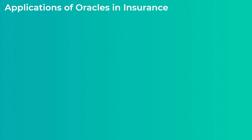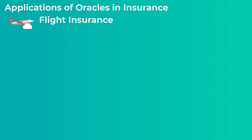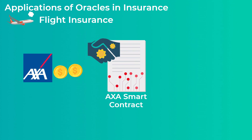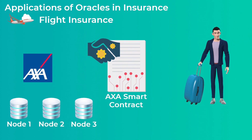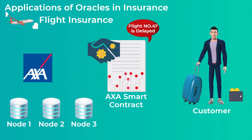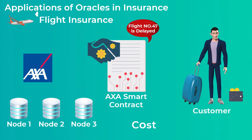Flight insurance is an area where oracles are currently being used by big insurance companies like AXA. The insurance company locks a large amount of money in a smart contract. This smart contract gets flight delay data from oracle nodes, and when a customer's flight is delayed, it automatically sends them their insurance money — removing the need to contact the insurance company and wait for the situation to be investigated.